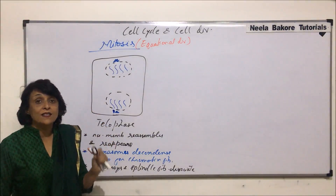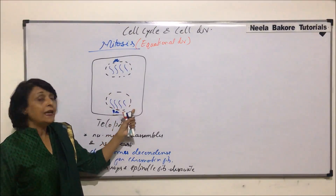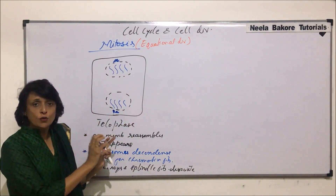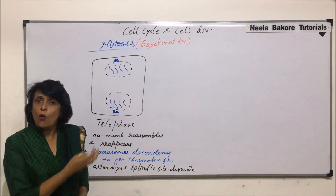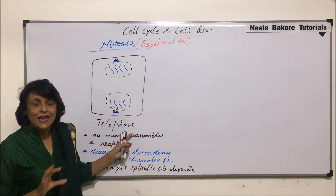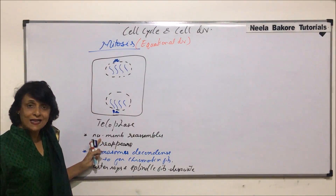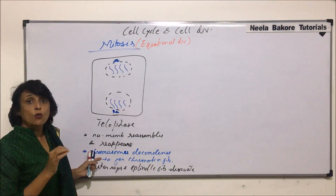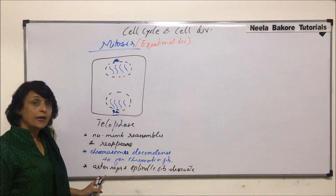Telophase is a reversal of prophase. In prophase the nuclear membrane disappears; here a new nuclear membrane reappears by reassembling. We are talking of only the nuclear membrane, but other membranous structures such as the endoplasmic reticulum and Golgi body would also reassemble and reappear, along with other structures like the nucleolus.